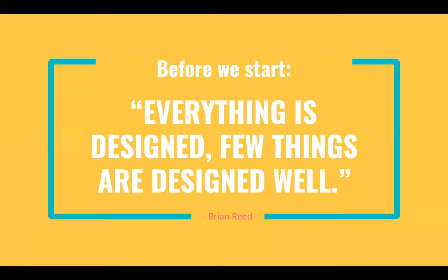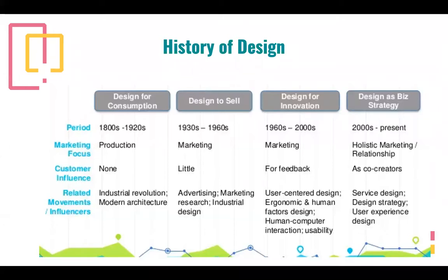Now let's start about design. We know everything is designed — from your smartphone to your computer — but not everything is designed well. If you look at design history, here's a brief overview. About 100 years ago, we were designing things for consumption during the industrial revolution. In the 1930s, there was more marketing — we designed things so they could sell well. From the 1960s to 2000s, there was more talk of design as innovation, user-centric design, and incorporating economics. And finally, in the last 10 to 20 years, we look at design as a business strategy — service design and user experience design.